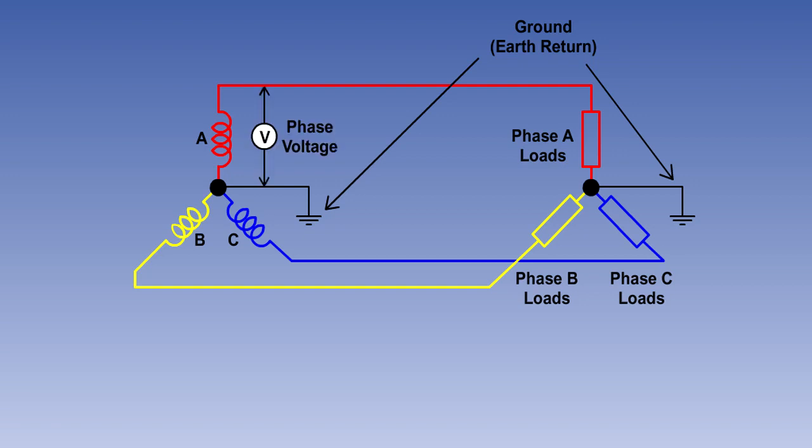A voltmeter measuring the potential difference between the neutral and a line lead would read the individual phase voltage. The potential difference between two line connections is known as the line voltage.